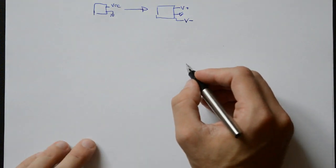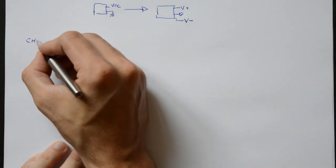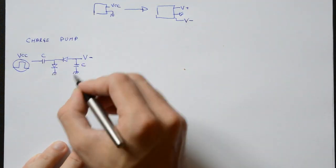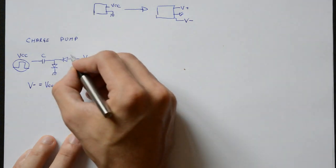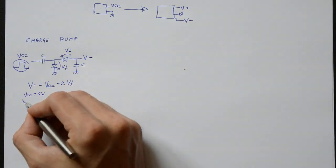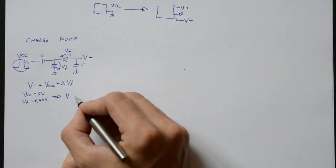Well, as always, there are multiple ways. The easiest would be to make a charge pump. This can be built with a square wave signal, some diodes and capacitors. The problem with this circuit is that the output voltage will be around 1-1.5 volts lower than the input, because of the diodes. So, from 5 volts, we get about minus 3.5.